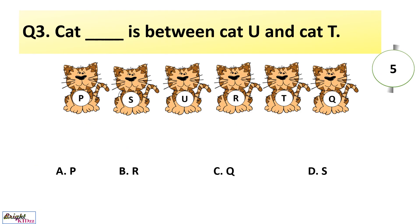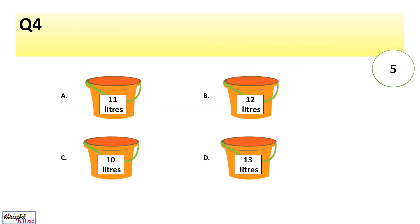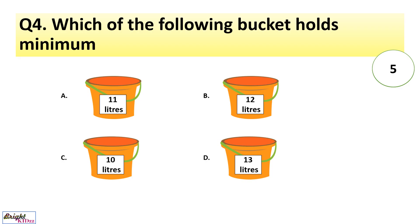Cat dash is between Cat U and Cat T. Answer: Cat R is between Cat U and Cat T. Which of the following bucket holds the minimum quantity of water? C bucket contains only 10 liter of water which is minimum.